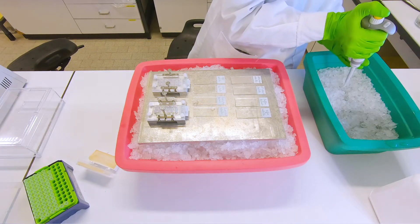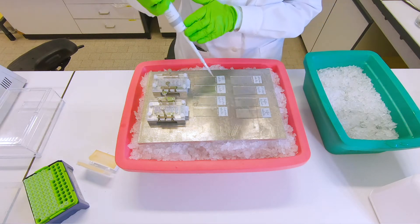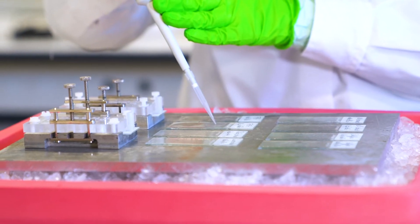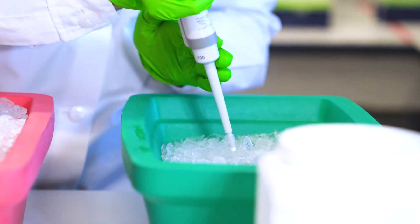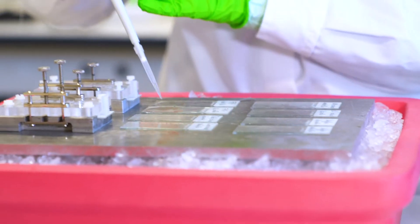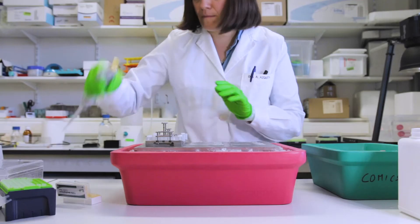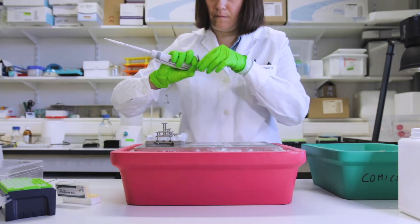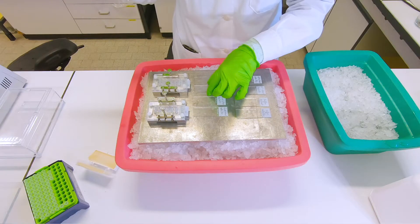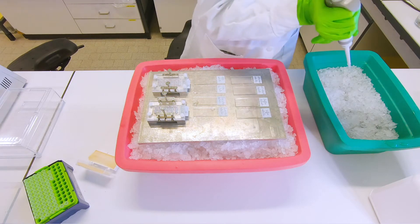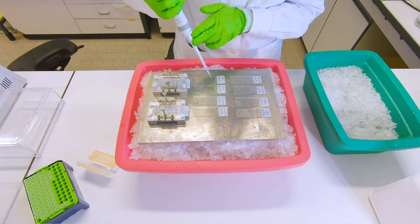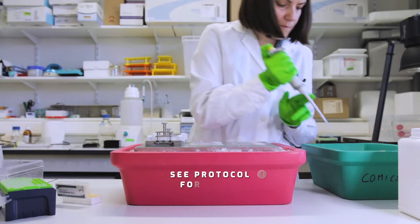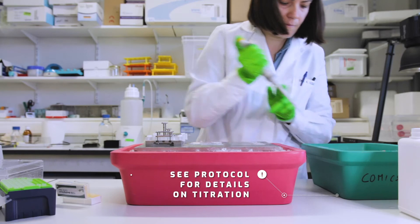So next we have our assay control which is FPG. And also for FPG, when you buy it from a commercial place or if you get it self-made, you always have to titrate and figure out your own dilution which works best for you and gives the best specificity.